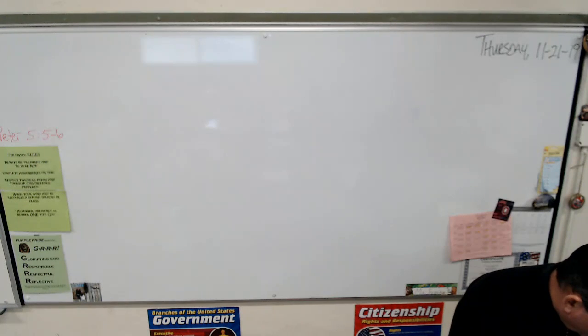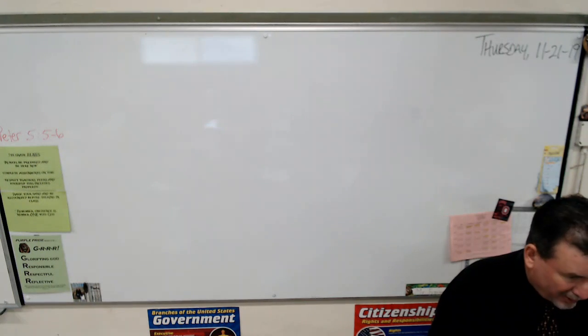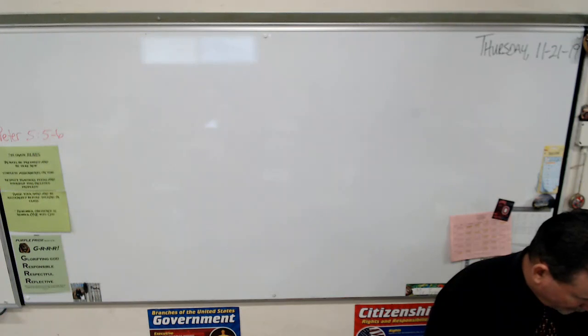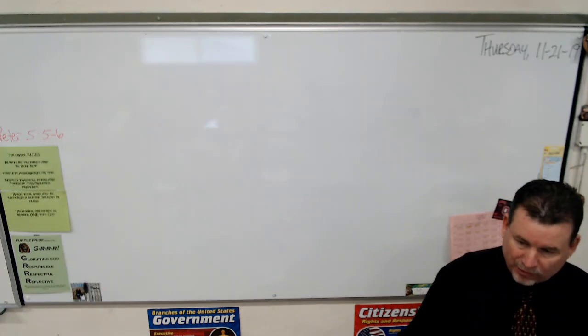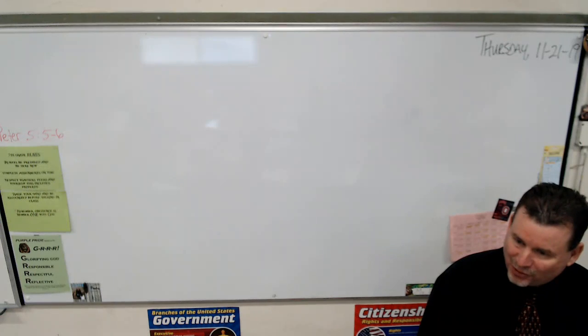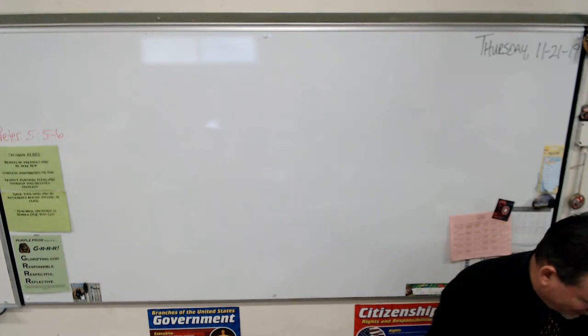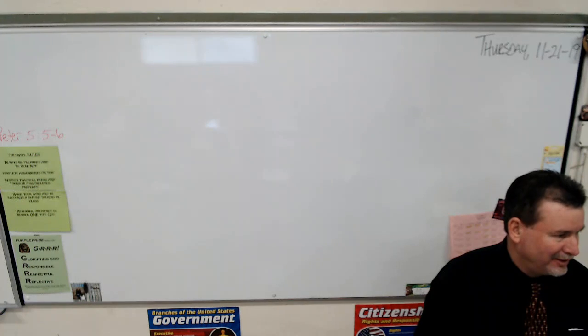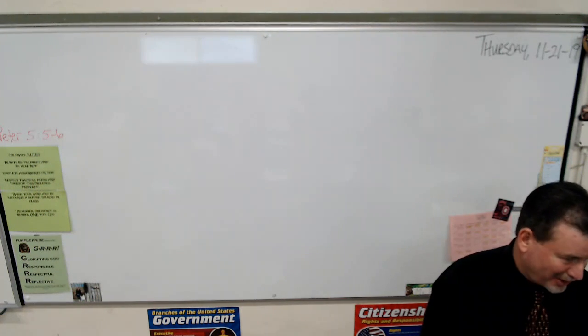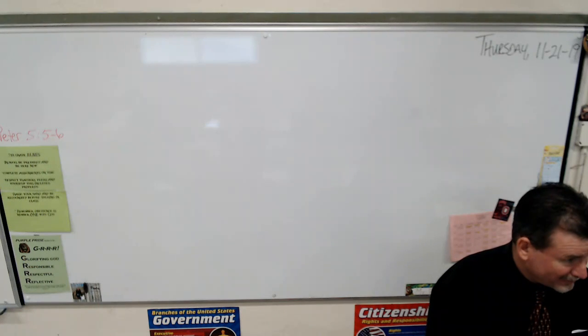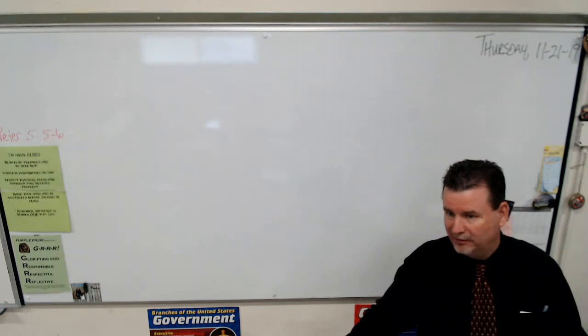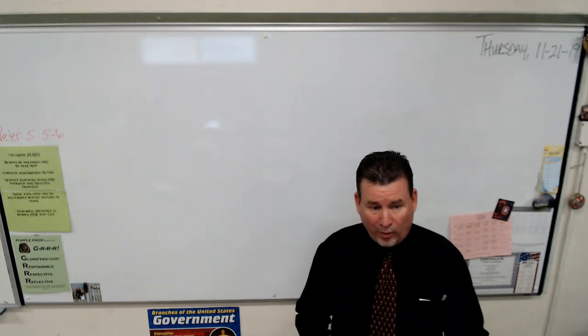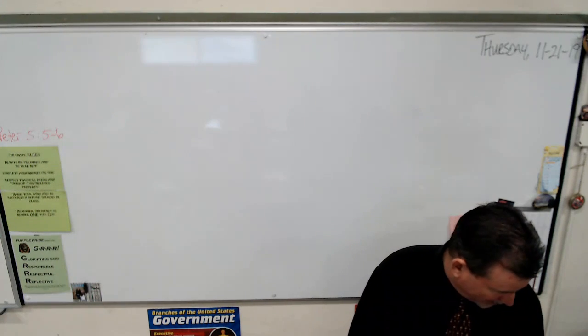Of course, number one was denominator, numerator. Hopefully nobody missed that. What was the error in number two? They added the denominators. When was the last time you made that mistake? Once you get a common denominator, keep it.